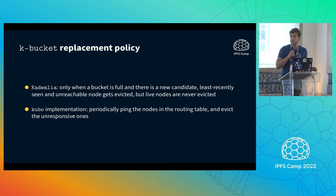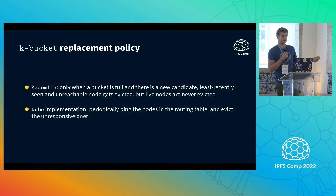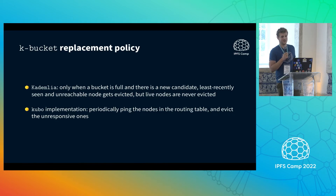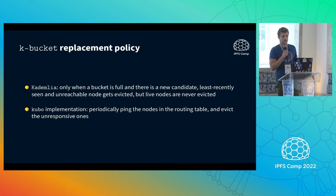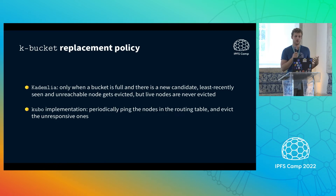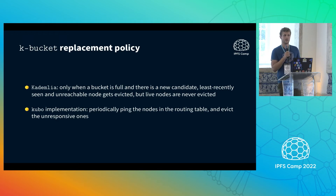How do you select peers for K-buckets? When you learn about a new peer you compute which bucket it belongs to. If there is space, you put it there. If the bucket is already full, it goes on a waiting list. Regularly, peers probe all the peers in their routing table, and if they fail to reply they get evicted. That's how new peers can get inside routing tables. Eventually only the very stable nodes remain because unstable ones get evicted.